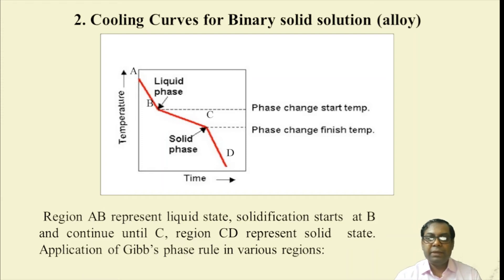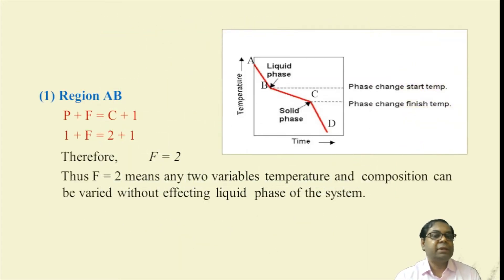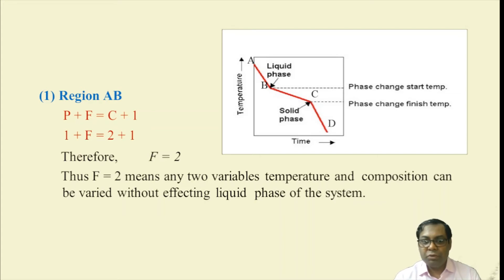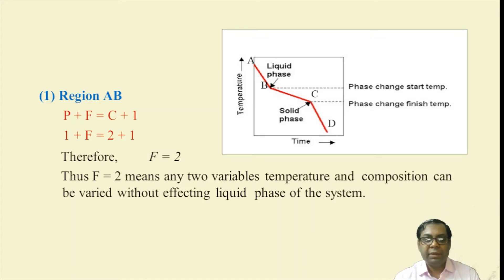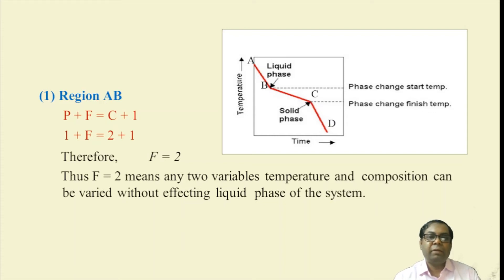Applying Gibbs phase rule in various regions for the binary alloy: in region AB, P + F = C + 1, with P = 1 and C = 2, giving F = 2. This means two variables — temperature and composition — can be varied without affecting the liquid phase of the system.